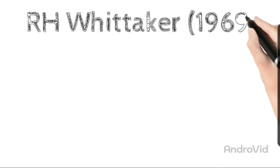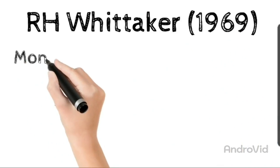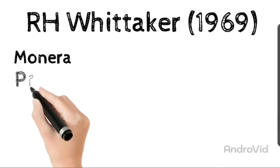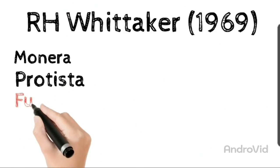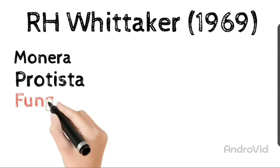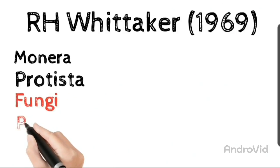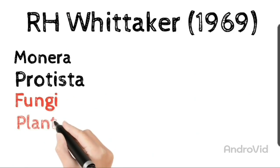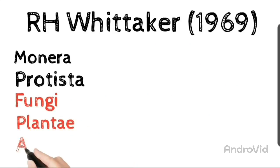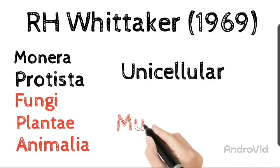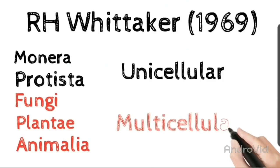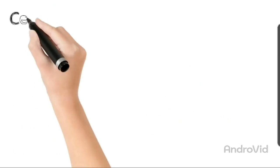So according to RH Whittaker's five kingdom system of classification given in 1969, आपकी पांच kingdoms हैं जिनका नाम था monera, protista, fungi, plantae and animalia. इन में से आपका monera और protista जो आपको यहाँ पर black color में दिख रहे हैं, यह आपके unicellular होते हैं. Monera में unicellular prokaryotic organisms आते हैं और protista में unicellular eukaryotic organisms आते हैं. So both of these kingdoms are unicellular and rest of the three kingdoms shown in red color are multicellular in nature.